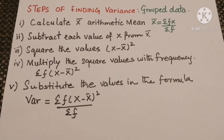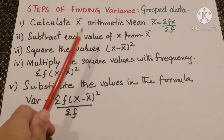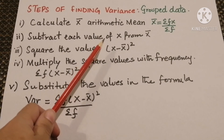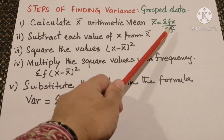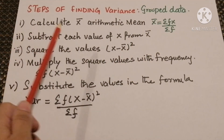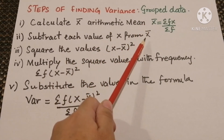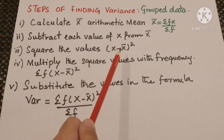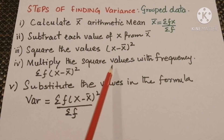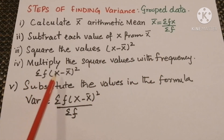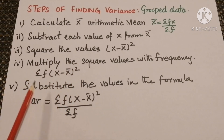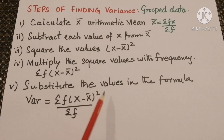Steps for finding variance for grouped data: First, calculate x̄ = sum of fx divided by sum of f. Second, subtract each x value from the arithmetic mean. Third, square those values to get (x minus x̄)². Fourth, multiply the squared values by the corresponding frequencies to get f(x minus x̄)². Finally, substitute into the formula variance = sum of f(x minus x̄)² divided by sum of f. This is how we find variance for grouped data when frequencies are given.